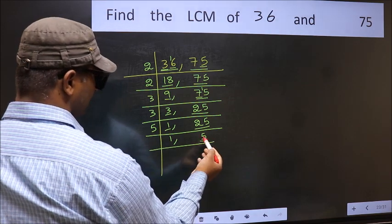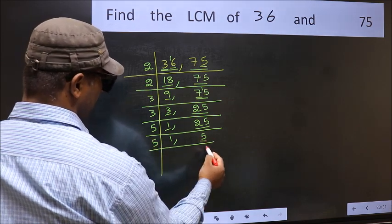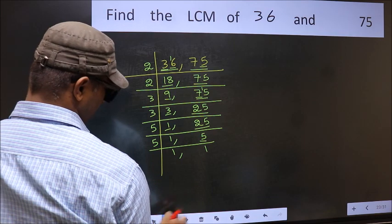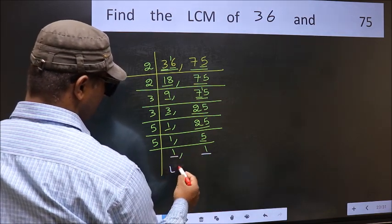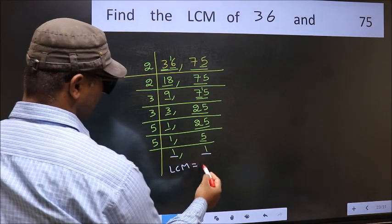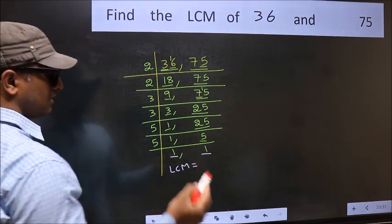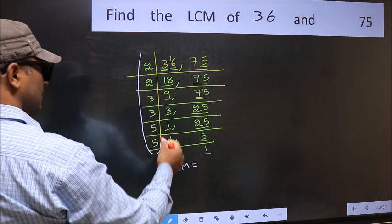Now here we have 5. 5 is a prime number, so 5 times 1 is 5. So we got 1 in both places. Our LCM is the product of these numbers.